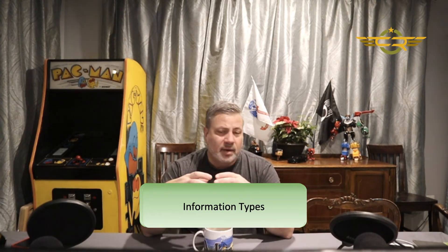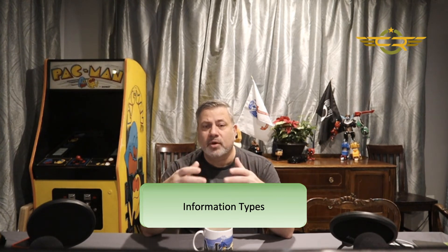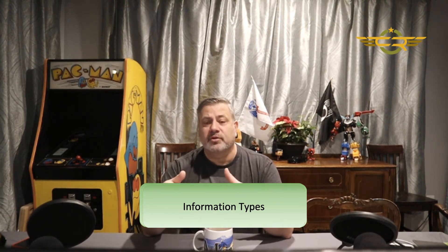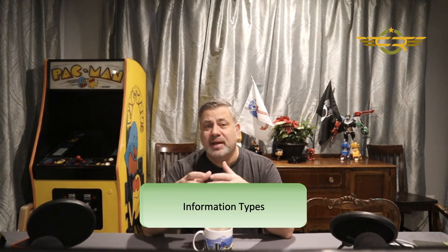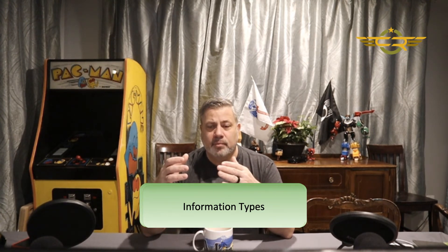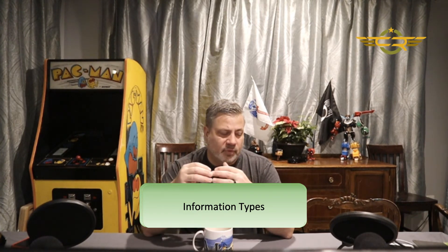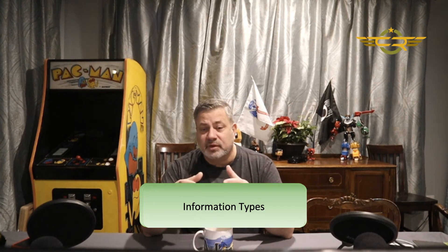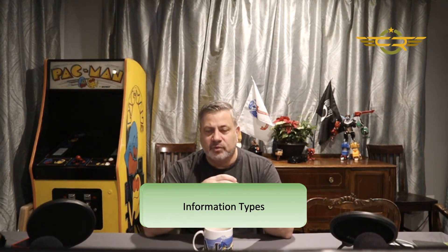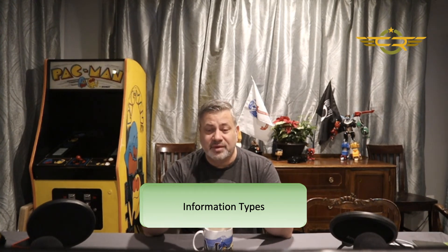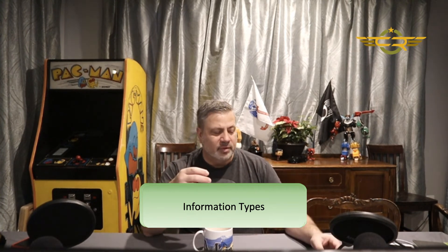Determine information types: we also have to determine what information types are going to be processed by the system, and this is going to help us with our categorization. The information types are important because determining the level of protection you have to apply to those information types will determine how much protection we have to put on the system. This is not a new task — it was part of a task in the old step one, but now it's been moved here so we understand these things before we even start building the system.